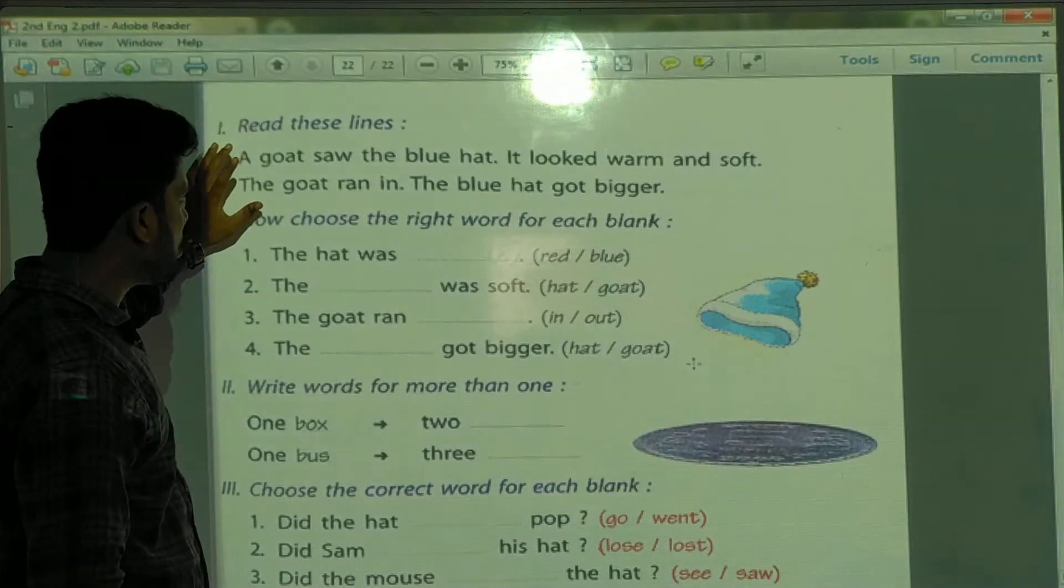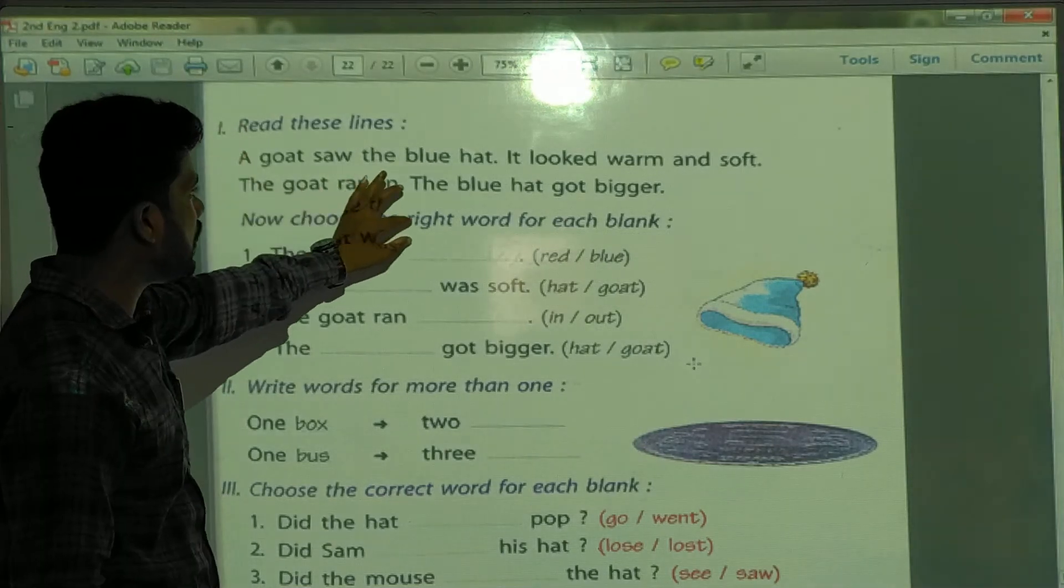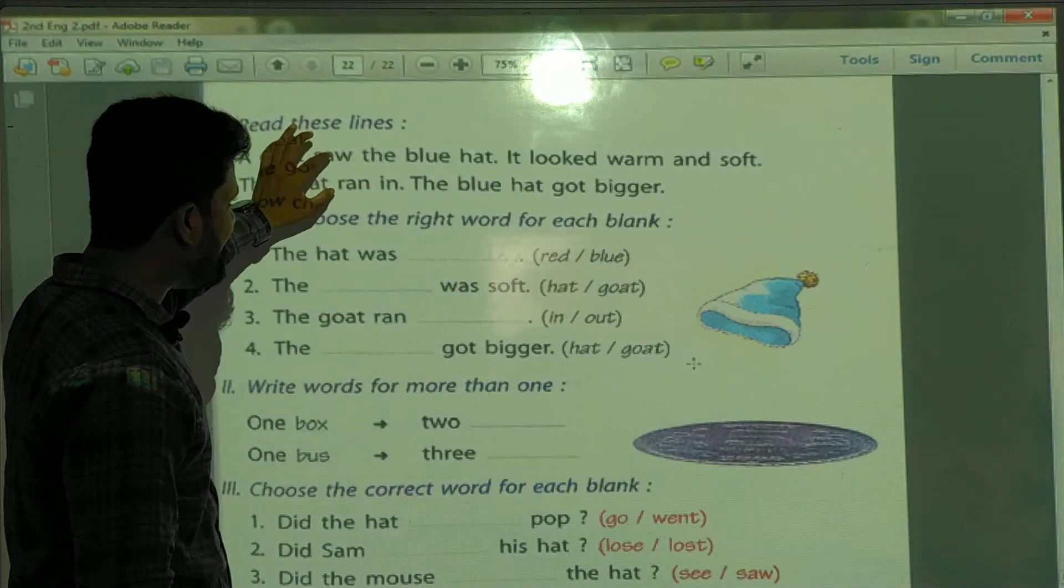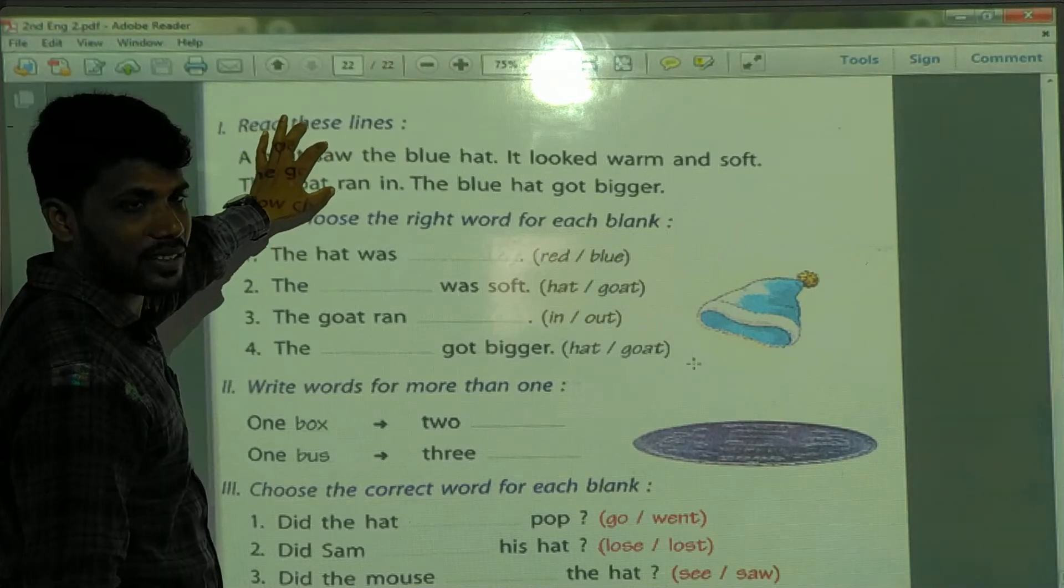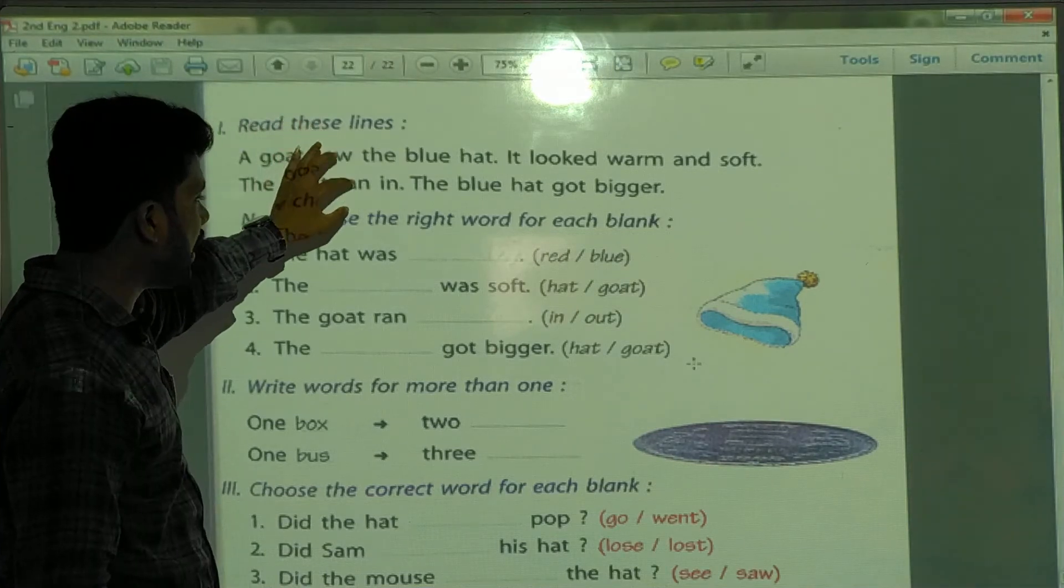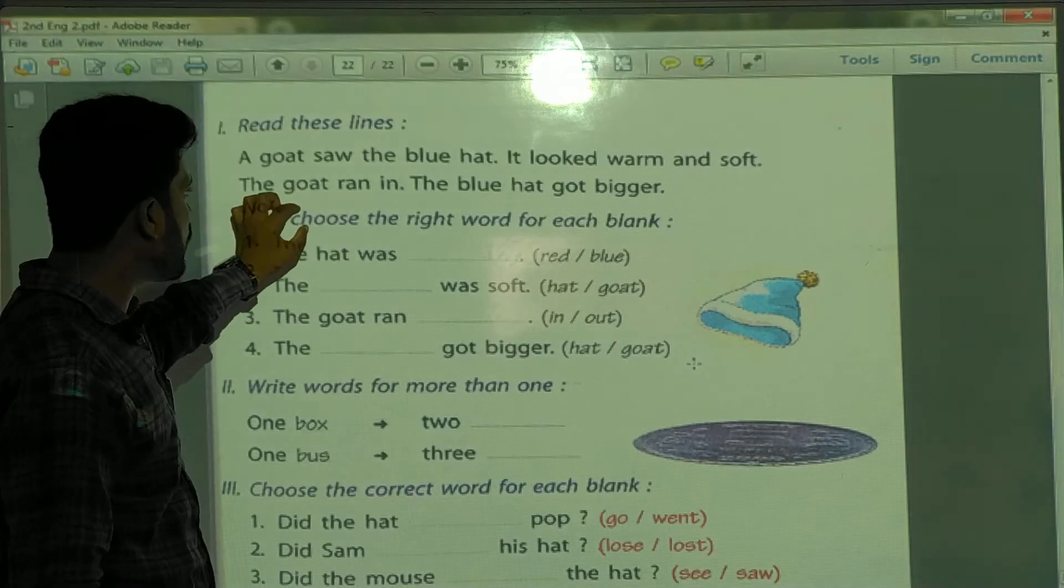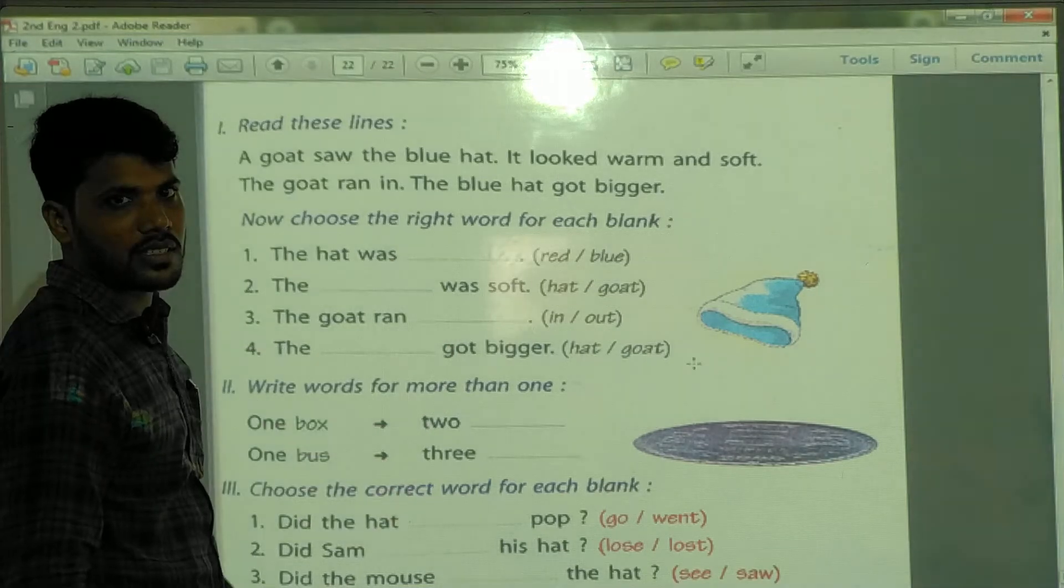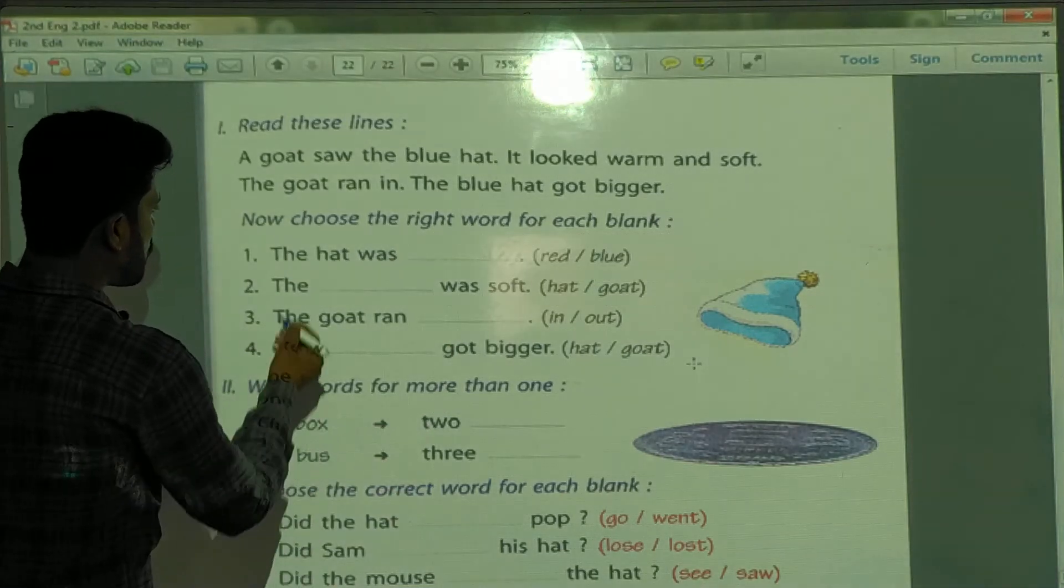Okay, so now, choose the right word for each blank. So, here, we already read these two lines. And here, we have to choose the correct answer for the given sentence. Understand? See, first one.